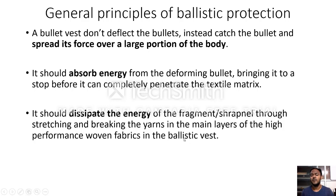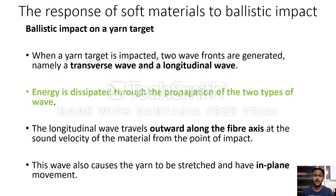The projectile strain energy should be dissipated throughout the textile material through stretching or breaking of yarns in the main layers of high-performance woven fabrics in the ballistic vest. Now, regarding the response of soft materials to ballistic impact: when a textile material — that is, the soft body armor — is impacted on a yarn target or a fabric target, two wave fronts are generated: a transverse wave and a longitudinal wave.